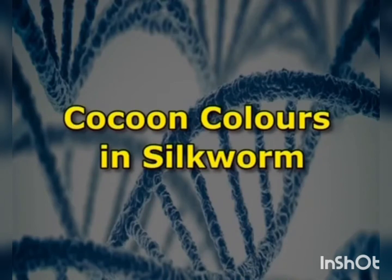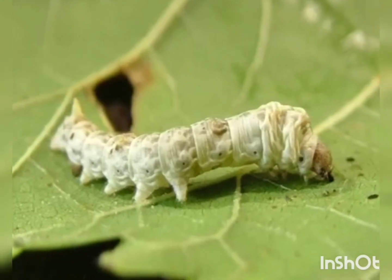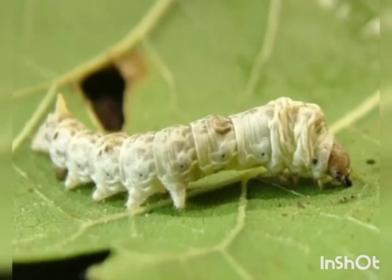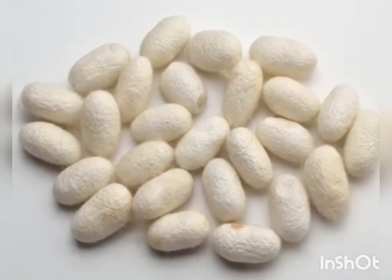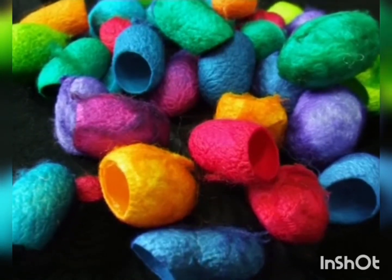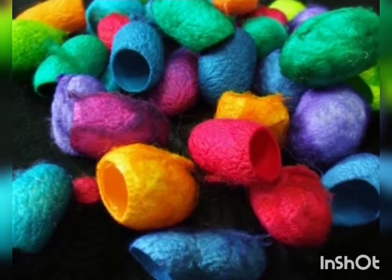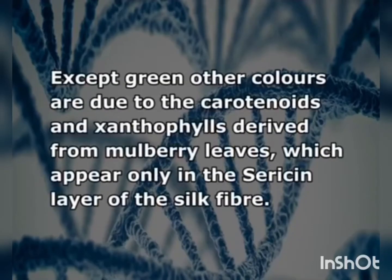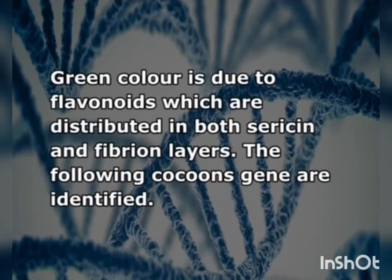Next, we will see the cocoon colors in silkworm. Most silkworm races reared in Japan and China are white cocoon varieties. Many cocoon color mutants are known, including yellow, flesh, pink, and green. Except for green, other colors are due to carotenoids and xanthophylls derived from mulberry leaves, appearing only in the sericin layer of the silk fiber. Green color is due to flavonoids, which are distributed in both the sericin and fibroin layers.